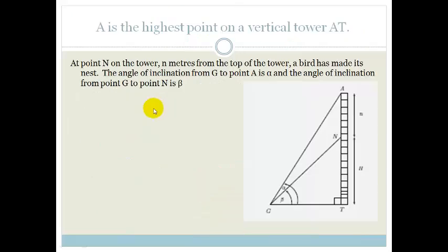Let's look at another example. It says, at point N on the tower, N meters from the top, a bird has made its nest. So there's the nest, okay? The angle of inclination from G to point A is alpha. So that there is alpha. And the angle of inclination from point G to point N is beta. First thing says, express angle AGN in terms of alpha and beta. So where is this? AGN. So we want this little angle there. Well, do you agree that angle AGN can actually be written as alpha minus beta? Because all of this is alpha. And just this little bit is beta. So therefore, angle AGN is going to be alpha minus beta. So I'm going to write it in there. That's alpha minus beta.